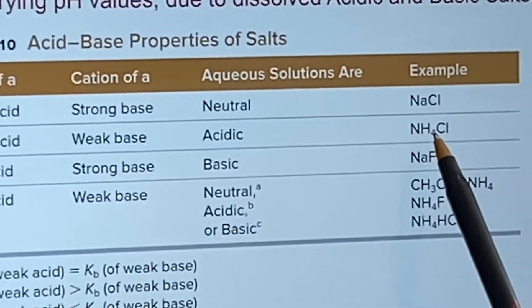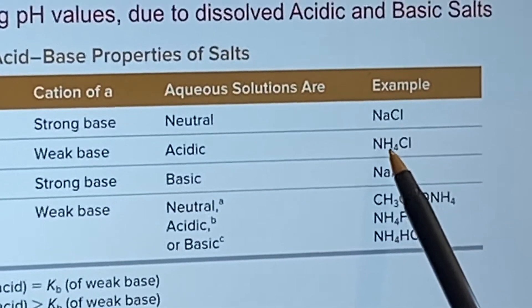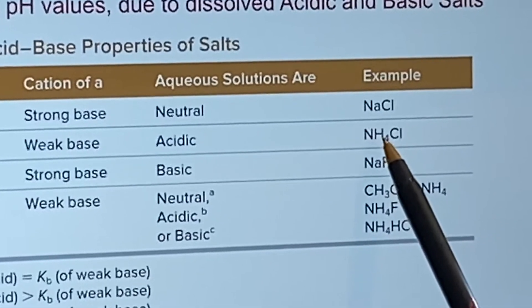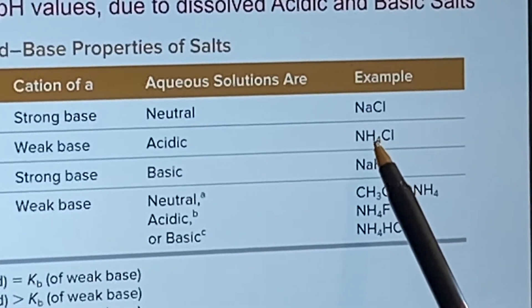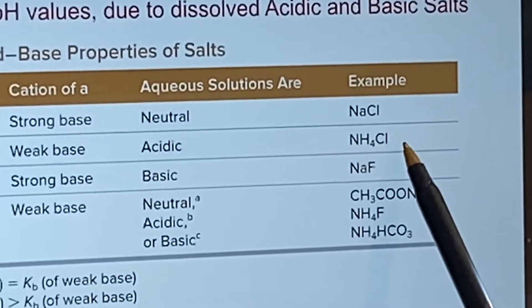Here we have an example. Ammonium ion. That comes from ammonia, which we know is a weak base. Chloride ion. Hydrochloric acid again. Strong acid.